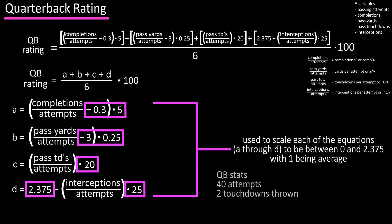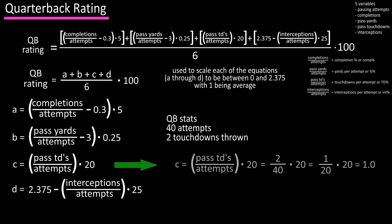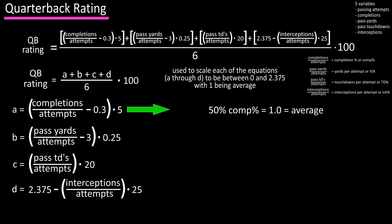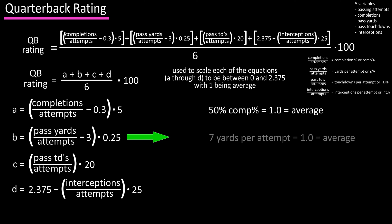For example, if a quarterback threw two touchdowns in 40 attempts using equation C, the result would be 1.0, meaning he would be considered average for that performance. For equation A, based on completion percentage, a 50% completion rate results in a 1, so 50% is considered average. For equation B, based on yards per attempt, 7 yards per attempt results in a 1, so 7 yards per attempt is considered average.